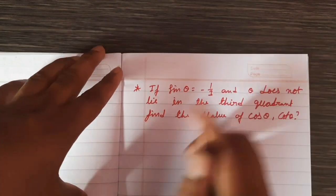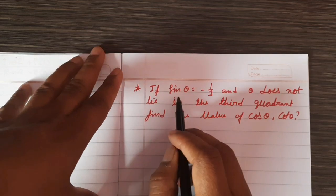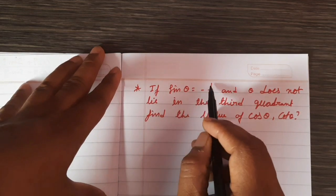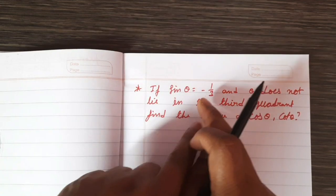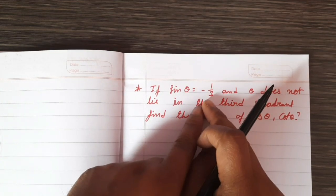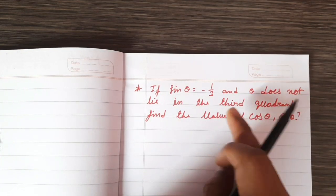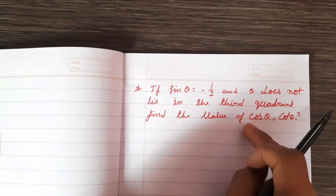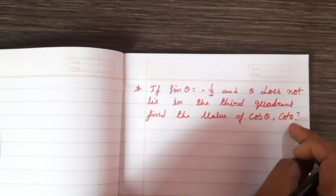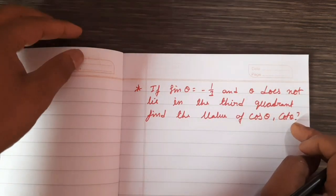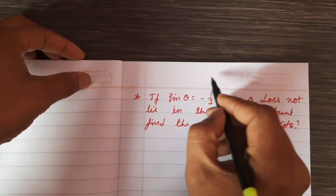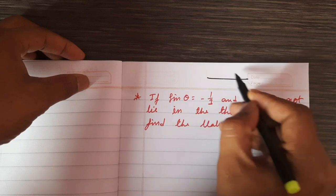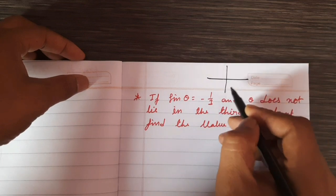So, first question: if sin θ is equal to minus 1 by 3, negative — like third coordinate — find the value of cos θ and cot θ. This is the coordinates explanation in the video.